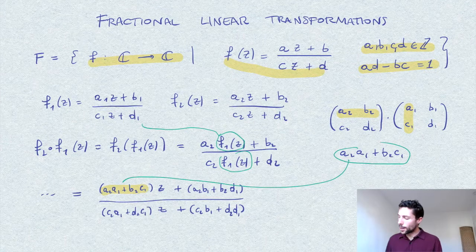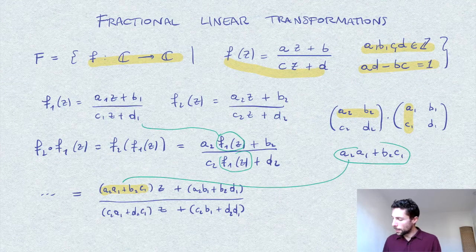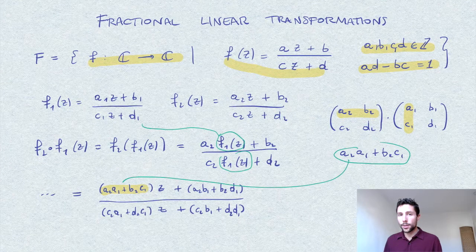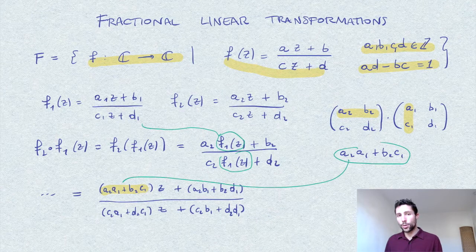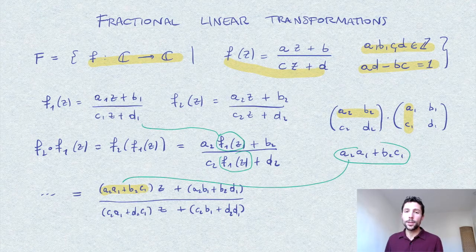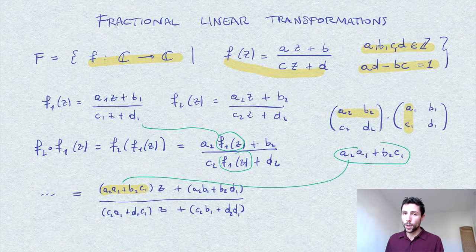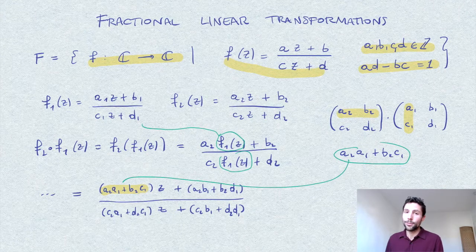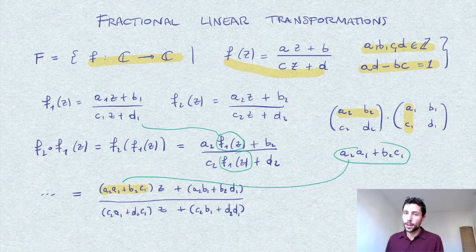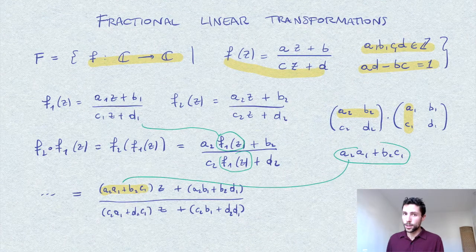Moreover, this condition ad minus bc equal to 1, translated into the realm of matrices, means that the determinant of such a matrix is 1. In particular, the matrix is invertible, which is something we really care about since we want to prove that F is a group. Let's now write down the corresponding group of matrices and give it a name.